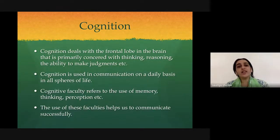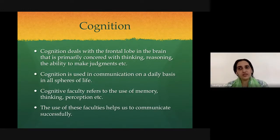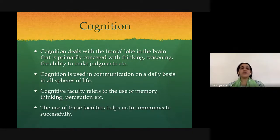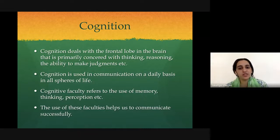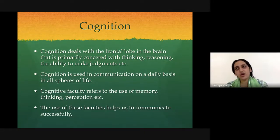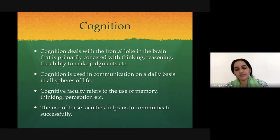Apart from memory, there are a few other aspects to cognition. There is thinking — how we think, what we think, the speed of our thinking, and how we develop our thinking. There is also perception, which is of various kinds. We normally perceive through our five senses, but the aspect I will focus on is visual perception, which will be a major part of today's presentation. All these cognitive faculties — memory, thinking, and perception — help us communicate in big and small ways. So we'll deal first with memory.